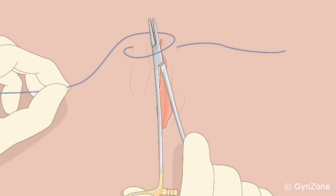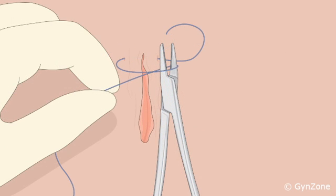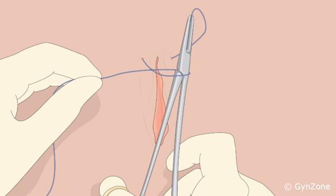The long end of the thread is wound once around the tip of the needle holder for each throw. This way, a loop of thread is produced around the needle holder. The short end of the thread is then gripped with the jaws of the needle holder and pulled through the loop.